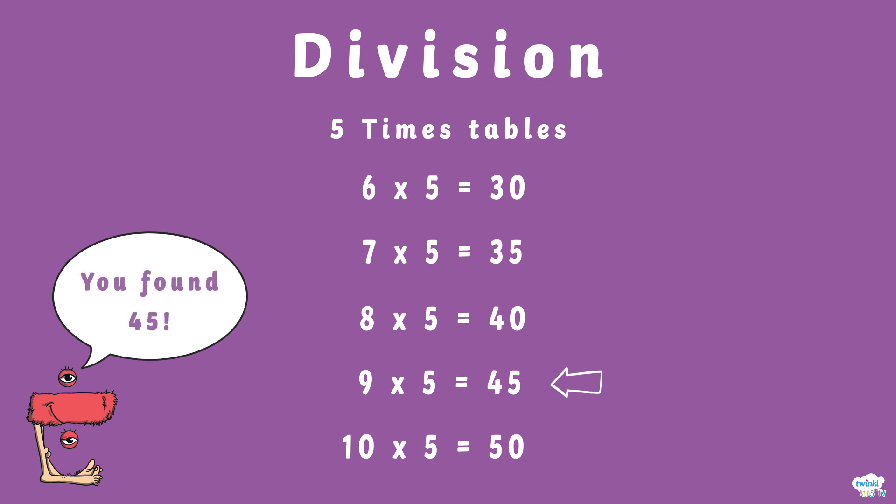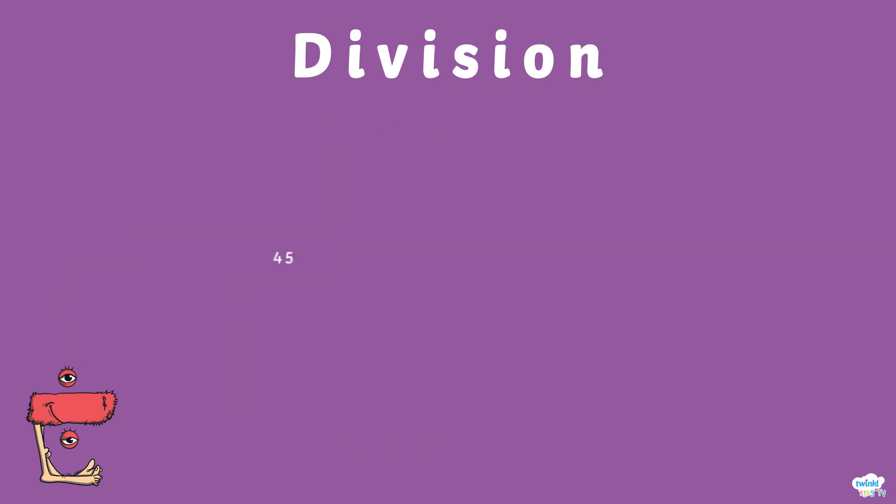You found 45! Now look at the sum to reveal how many tickets we can give to each school. 45 divided by 5 equals 9. You've worked out that only 9 tickets will be given to each lucky school.